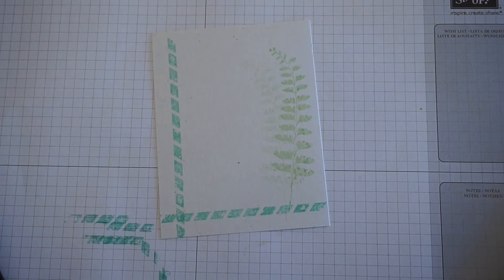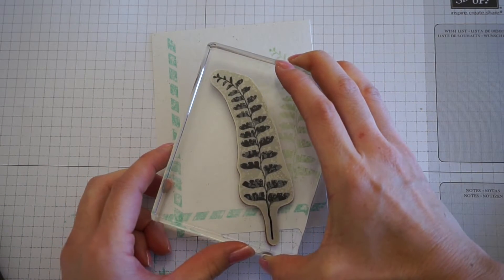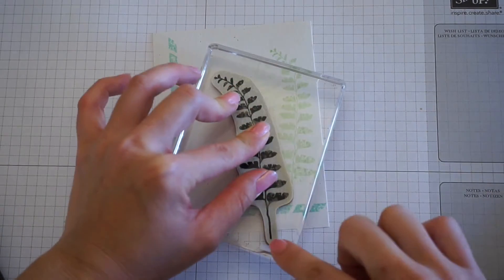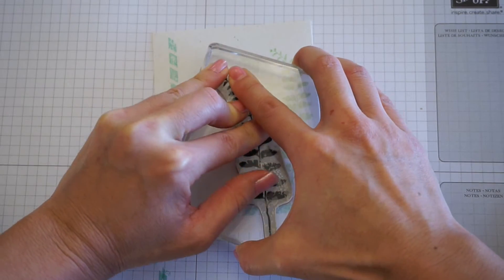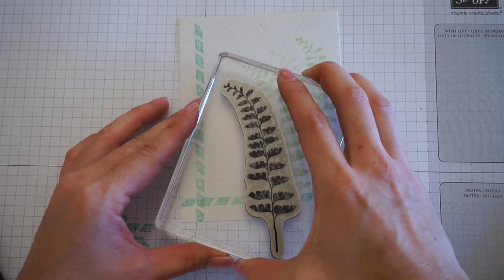You want to ink it a second time, move it further to the left and a little down. So this one, the stem, will be a little off the page. And then again, you want to stamp it one more time, move it to the left.